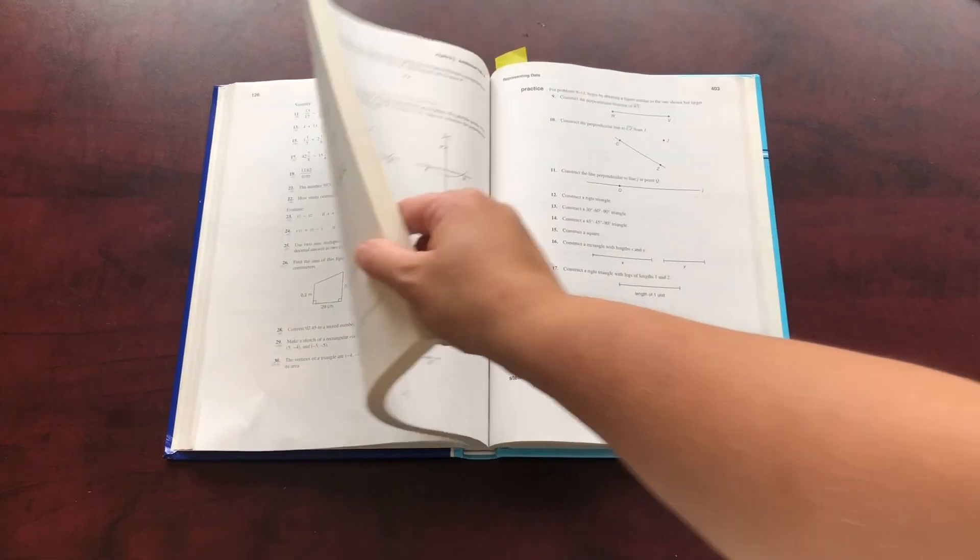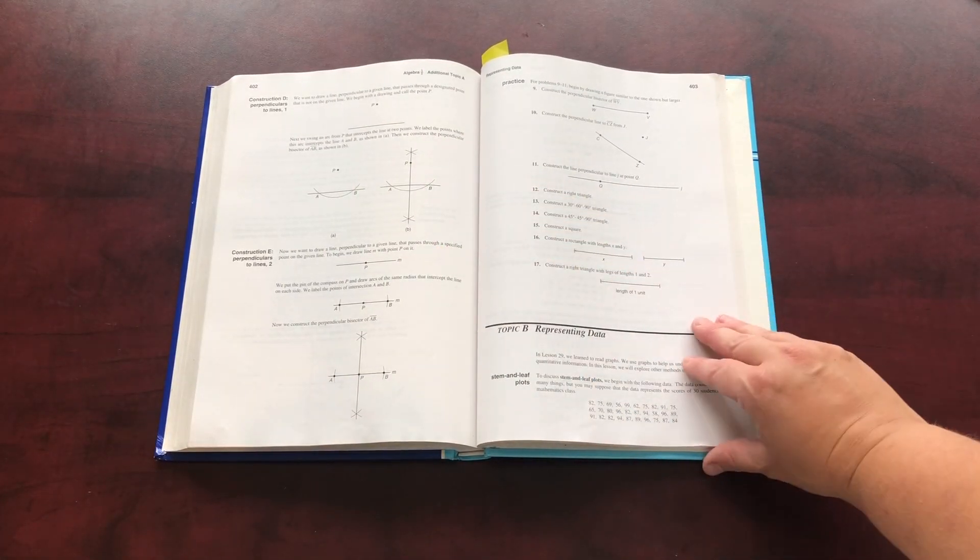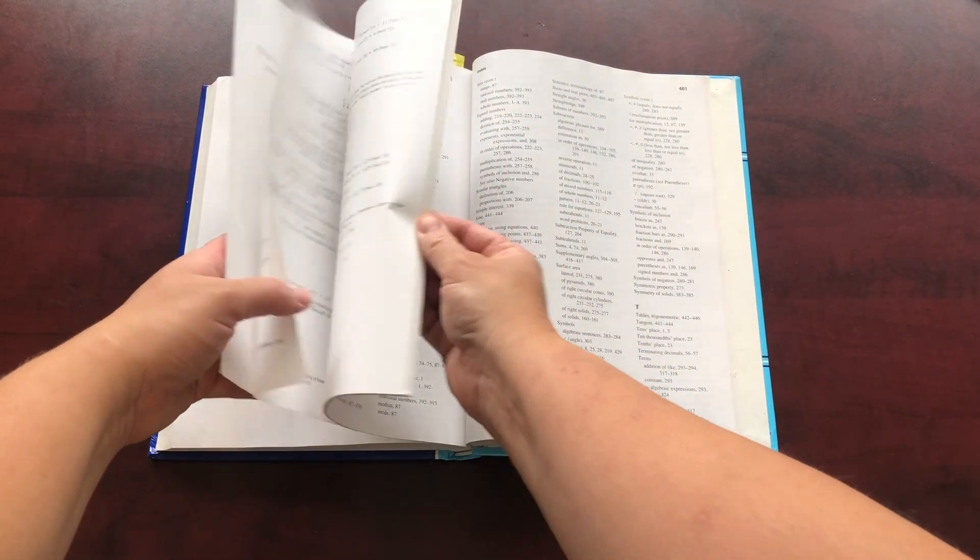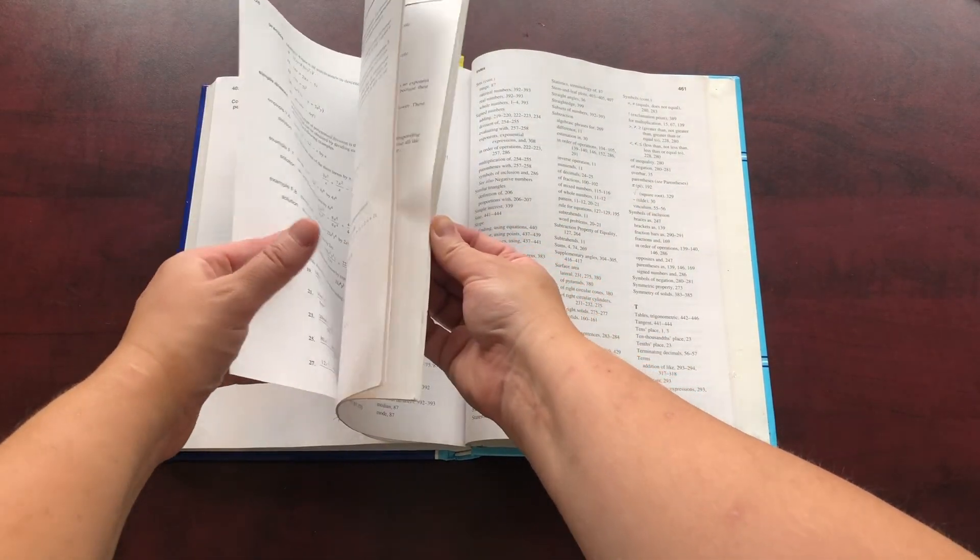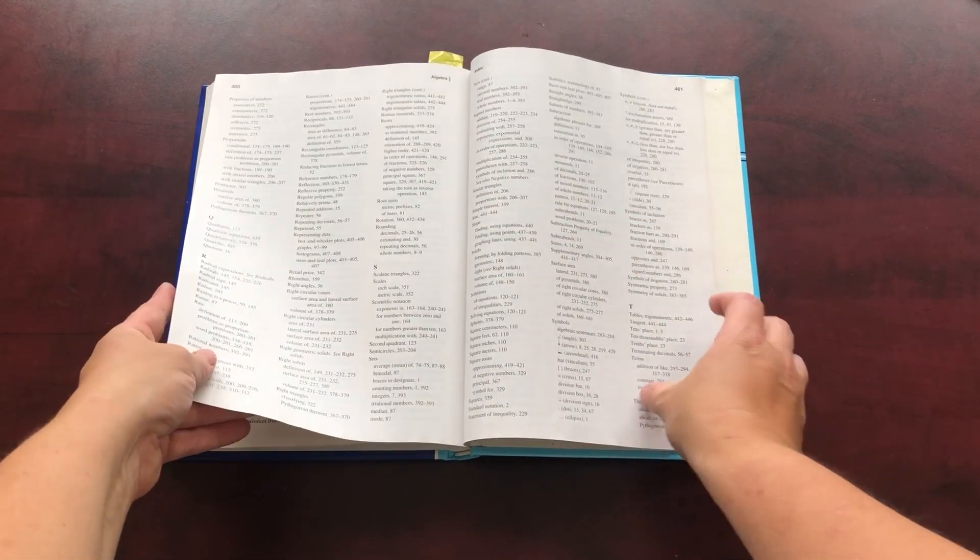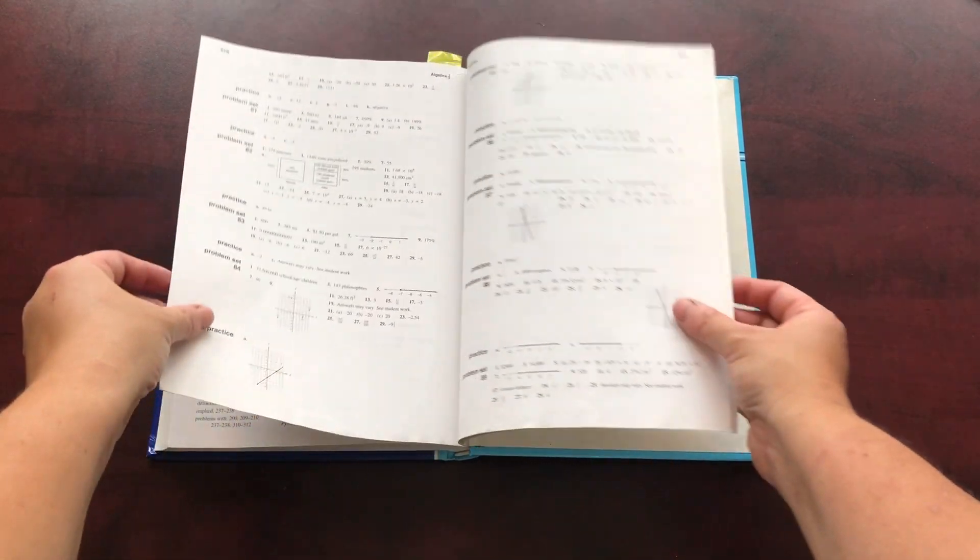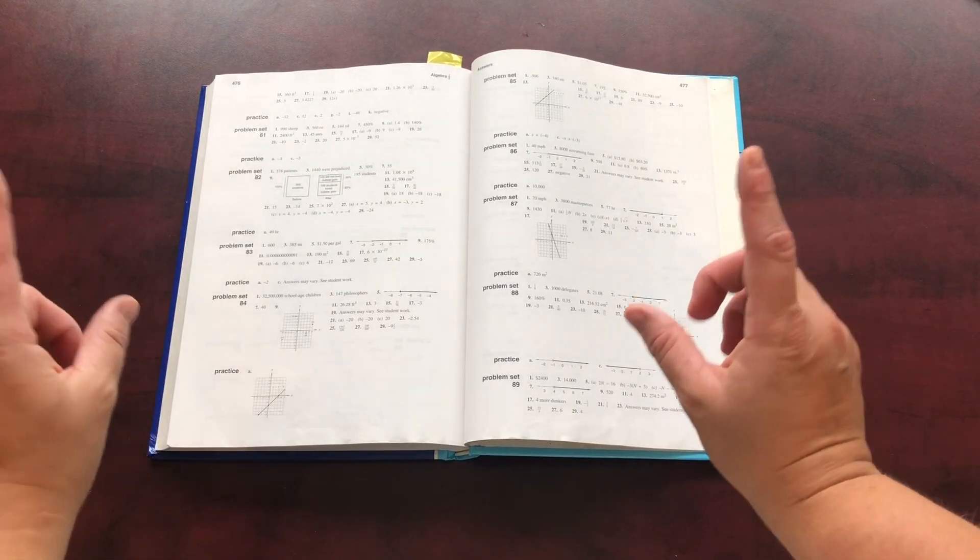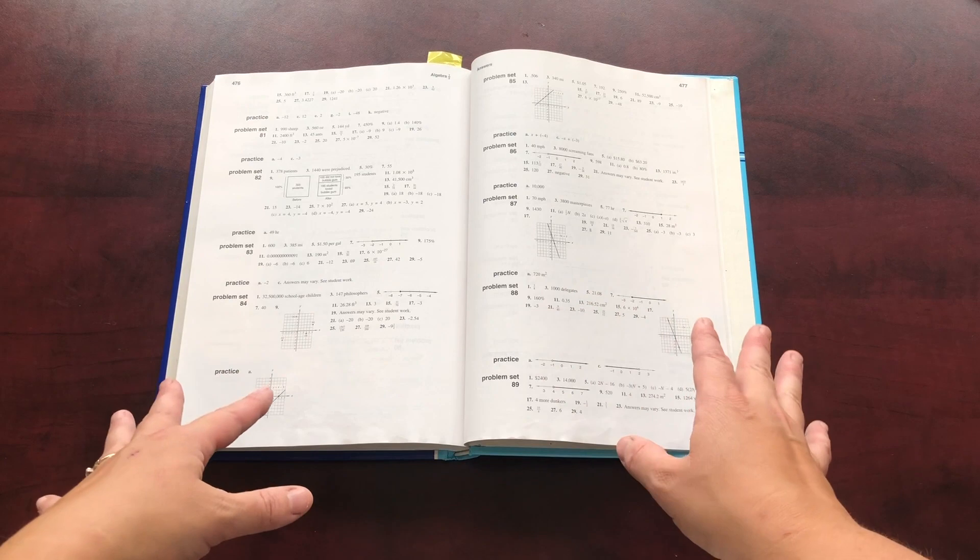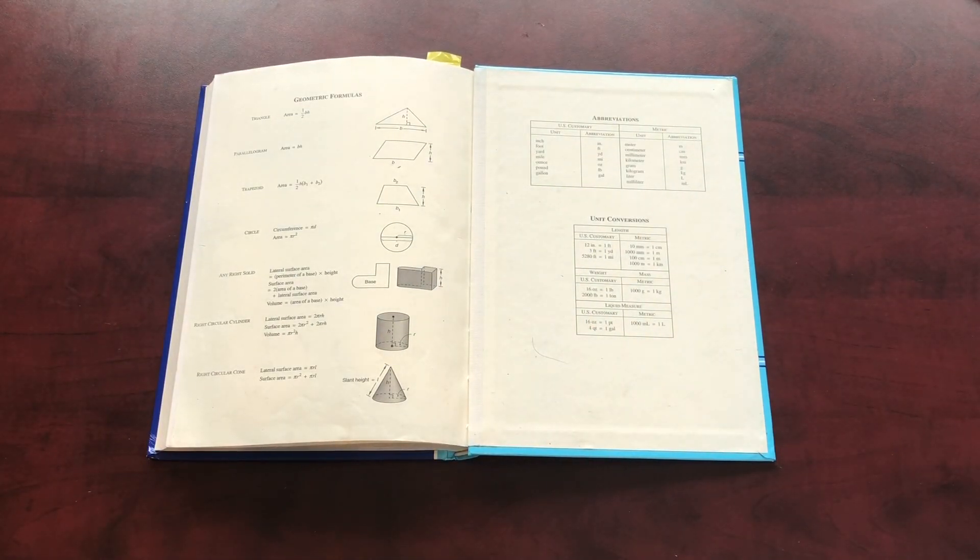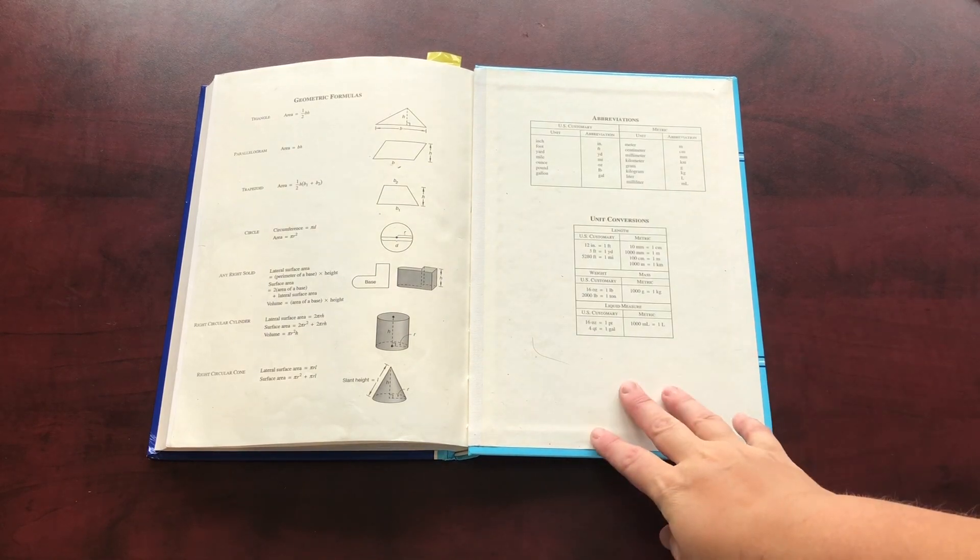At the back here, there were those extra topics. Here's an example of that. And then there is the glossary, the index, and then at the very back are the answers to the odd numbered questions. Notice these are just the answers. These are not the explanations on how to answer them. And then here they have the geometric formulas, abbreviations, and unit conversions for students.